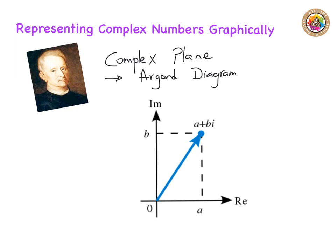The Argand diagram is made up of two different axes: the real axis for the real numbers and the imaginary axis for the imaginary numbers. The real axis is along the horizontal axis and the imaginary numbers go along the vertical axis. We're going to simply attempt to represent some complex numbers graphically.